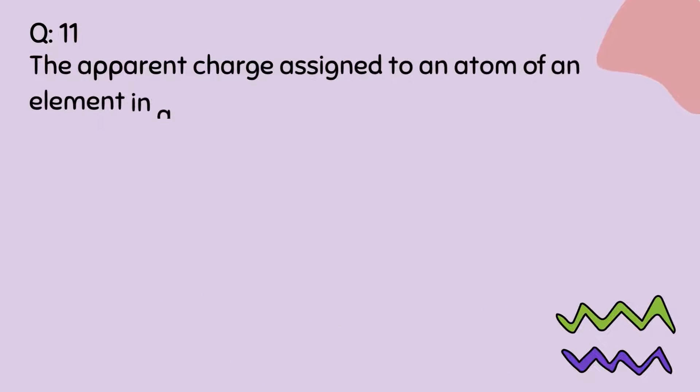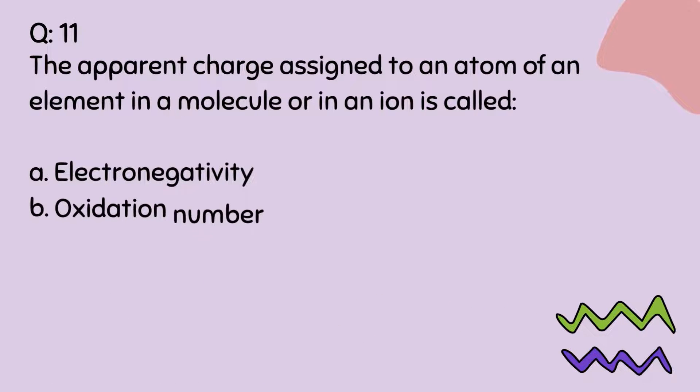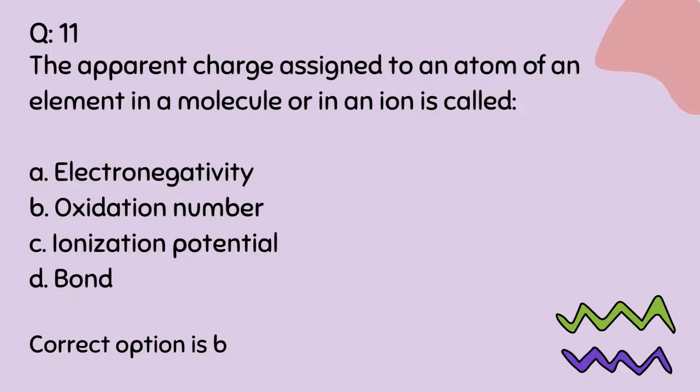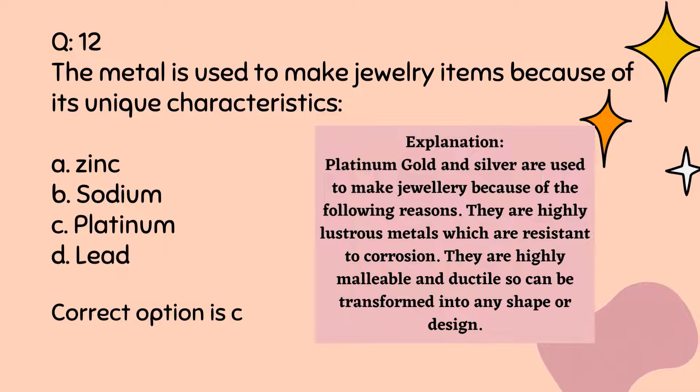Question number 11. The apparent charge assigned to an atom of an element in a molecule or in an ion is called: A, Electronegativity, B, Oxidation number, C, Ionization potential, D, Bond. Correct option is B. Question number 12. The metal is used to make jewelry items because of its unique characteristics: A, Zinc, B, Sodium, C, Platinum, D, Lead. Correct option is C.